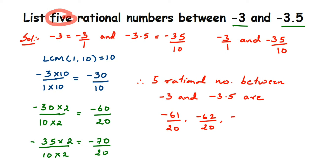An important thing to note: there are infinitely many rational numbers between two rational numbers. So your answer may differ from mine — I multiplied by 2, but you could multiply by 4 or 5, giving different results. That's okay, as long as the numbers lie between the two given numbers. Thanks for watching.